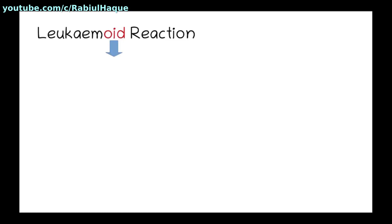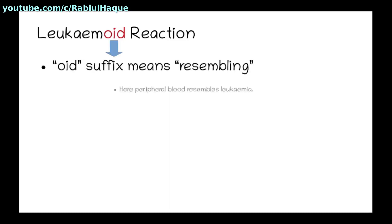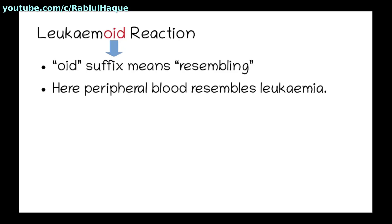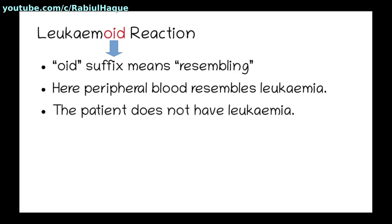We will start with some introductory points regarding leukemoid reaction. In the word leukemoid, the suffix '-oid' means resembling. So here, the peripheral blood of the patient will resemble the blood picture of a leukemic patient. However, this particular patient does not have leukemia. That's why we say this patient has leukemoid reaction — leukemoid, meaning it resembles leukemia.